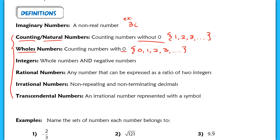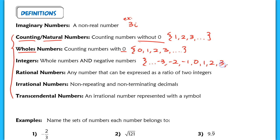Then people got a little more advanced and there was a need to express a negative quantity — probably when somebody owed someone else a debt. So they came up with a more advanced number system that included negative numbers and whole numbers, and we call those integers. Those would be numbers like negative 3, negative 2, negative 1, 0, 1, 2, 3, and so on.